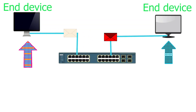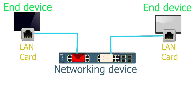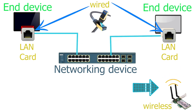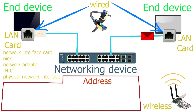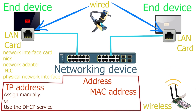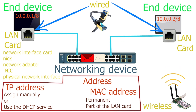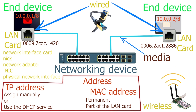Let us quickly recap all the terms we have learned. An end device generates, sends, and receives data in the network — it sits at the end of the conversation. A networking device filters and forwards data and works in the middle of the conversation. A LAN card connects an end device to the network. There are two types: wired, which connects with a cable, and wireless, which uses radio spectrums. A LAN card is also called a network interface card, NIC, network adapter, or physical network interface. Each end device uses a unique combination of an IP address and a MAC address. The IP address is customizable and must be manually assigned or configured via a service. The MAC address is permanent and is part of the LAN card. Media is the medium an end device uses to connect to the network — wired media uses a cable, and wireless media uses radio spectrums.